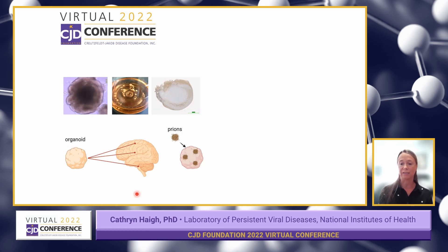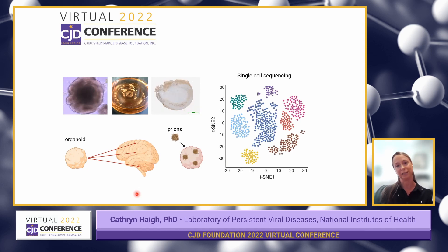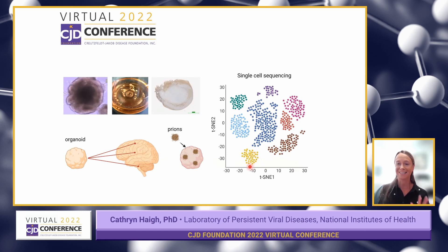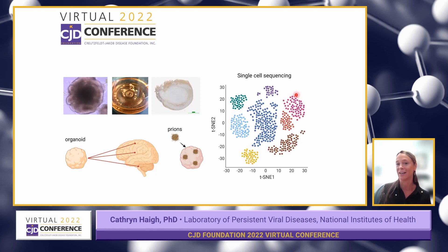The way we're going to look at the cells is to use a fairly new technique called single-cell sequencing. This looks at the genes that are expressed within the organoids. You are defined by your genes — it defines your hair color, your eye color — and it's the same with the cells within the organoids. Their genes define them, which means we can identify them. The readout we get looks like this: each dot is an individual cell, and this is kind of the family tree of cells, where cells that are most closely related — the same type — are grouped together, and the distant relatives are over here.